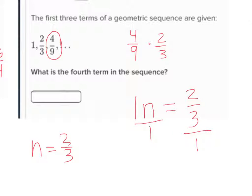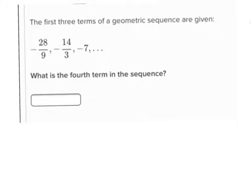So let's take our 4 ninths, and let's multiply it by 2 thirds, and that'll give us the fourth term. That gives me 8 over 27. And I'm going to put 8 over 27 in the computer, because if I make it a decimal, it's a repeating decimal.